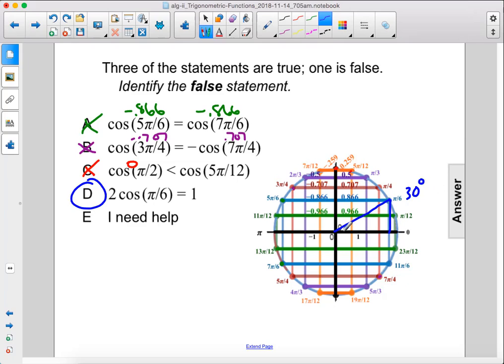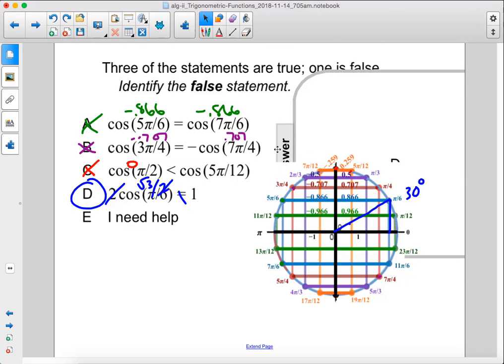So the cosine of 30 degrees is the square root of 3 over 2. So times 2, the 2s would cancel, but the square root of 3 does not equal 1. Therefore, the answer here is D.